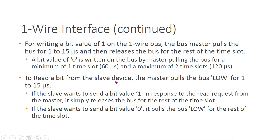To read a bit from a slave device, the master pulls the bus low for 1 to 15 microseconds. If the slave wants to send a bit value of 1 in response, it simply releases the bus for the rest of the time slot. If the slave wants to send a bit value of 0, it pulls the bus low for the rest of the time slot. These read and write operations — how to read 1, how to send 0 — can all be understood from these points.